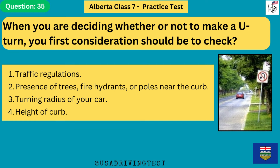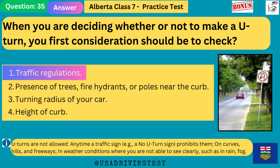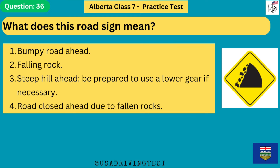When you are deciding whether or not to make a U-turn, your first consideration should be to check: 1. Traffic regulations. 2. Presence of trees or fire hydrants or poles near the curb. 3. Turning radius of your car. 4. Height of curb. The answer is 1: traffic regulations. U-turns are not allowed anytime a traffic sign (such as a no U-turn sign) prohibits them, on curves, hills, and freeways, or in weather conditions where you are not able to see clearly, such as in rain or fog.